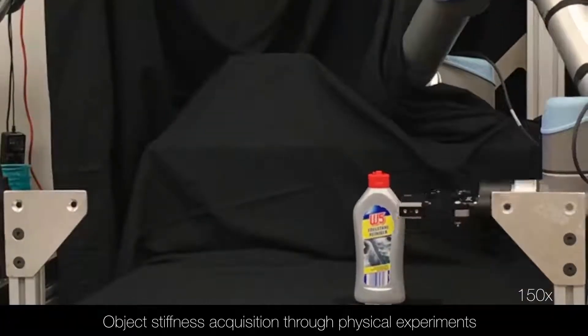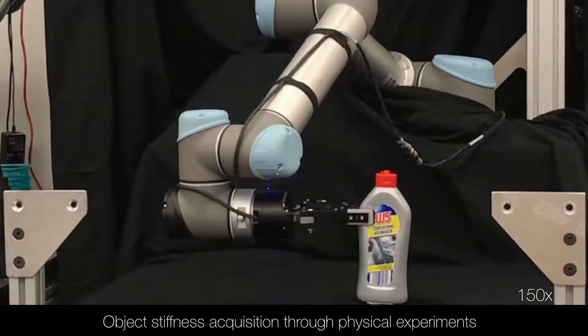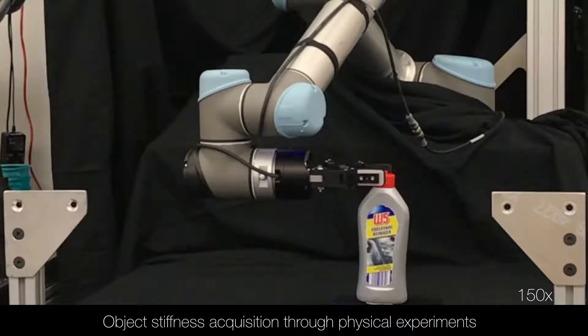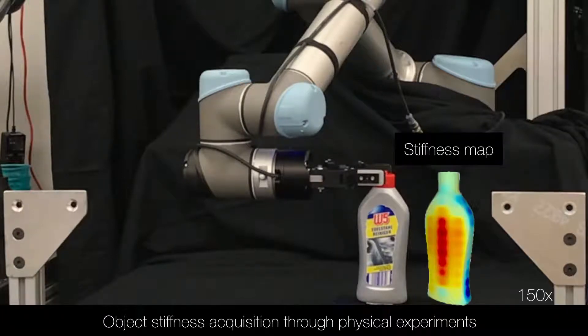We compute object stiffness through physical experiments where the gripper squeezes each location with the minimum possible force. Here we show the object stiffness map, where red indicates low stiffness.